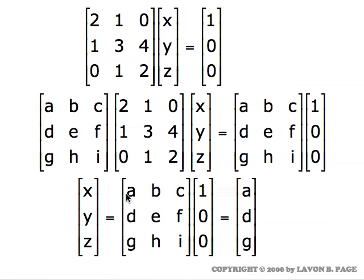That equals the product on the right. If we multiply it out, we get a times one plus b times zero plus c times zero, which is just a at the top. This row times this column gives us d, and this row times this column gives us g. So the solution for that system of equations — the x, y, z values — are given by the numbers a, d, and g in the inverse matrix.